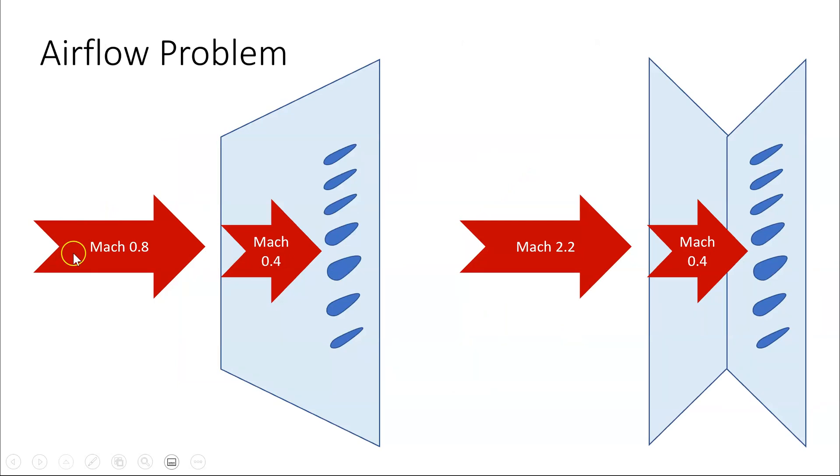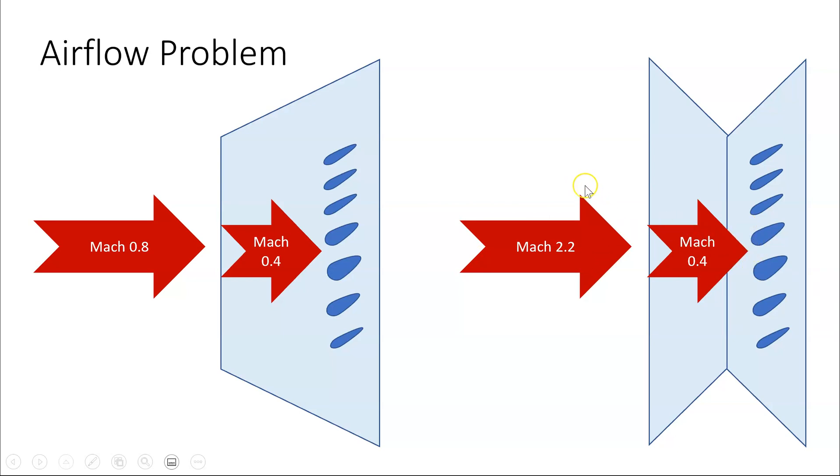How can an aircraft flying at Mach 0.8 have an air flow at Mach 0.4 at the compressor inlet? Or for a supersonic aircraft, how can an aircraft flying at Mach 2.2 have an air flow at Mach 0.4 at the compressor inlet? Well, to do that, we will have to review Bernoulli's theorem.